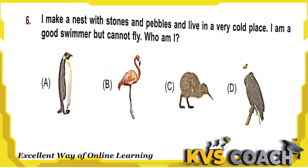Next question: I make a nest with stones and pebbles and live in a very cold place. I am a good swimmer but cannot fly. Who am I? This is the penguin — it can swim but cannot fly, and it is still a bird. Option A is the right answer.